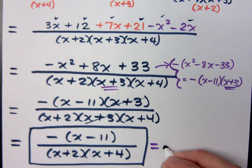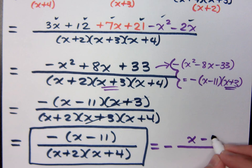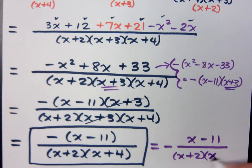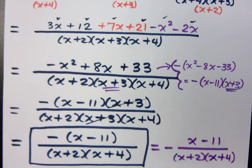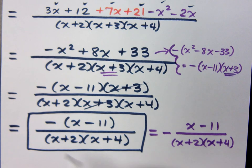You may see it rewritten with the negative right out in front of that fraction at the same level as the fraction. You just have the factor without the parentheses in the numerator, x minus 11. And then the two factors in the denominator, x plus 2 and x plus 4. This is also a valid way of writing your answer. So you can just move the negative right out in front like I have here.